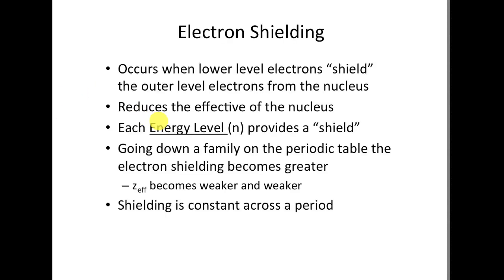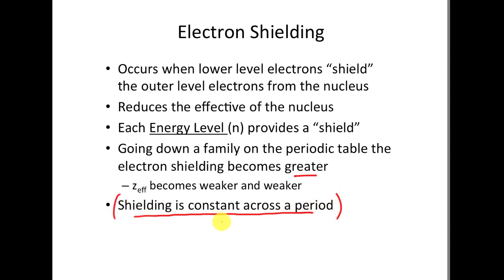Shielding happens most dramatically when we add a new energy level. When we go down a family on the periodic table, that's where shielding becomes the greatest, so ZEFF is weaker and weaker as we go down a group because that's when we add a new energy level. When we move across a period, shielding is pretty much constant because you're staying within the same energy level — not completely constant because of that S/P difference, but overall from left to right it tends to be constant.